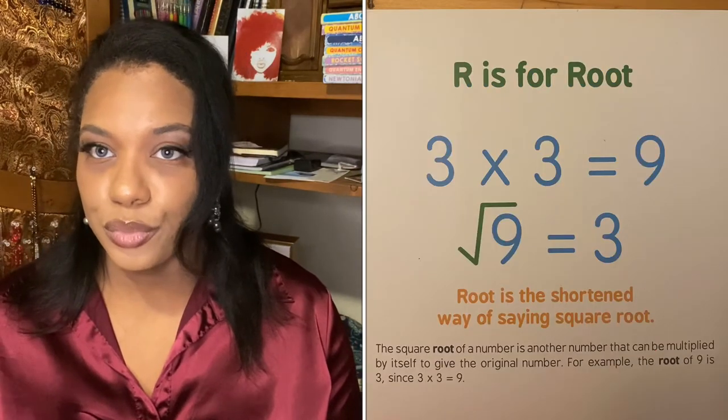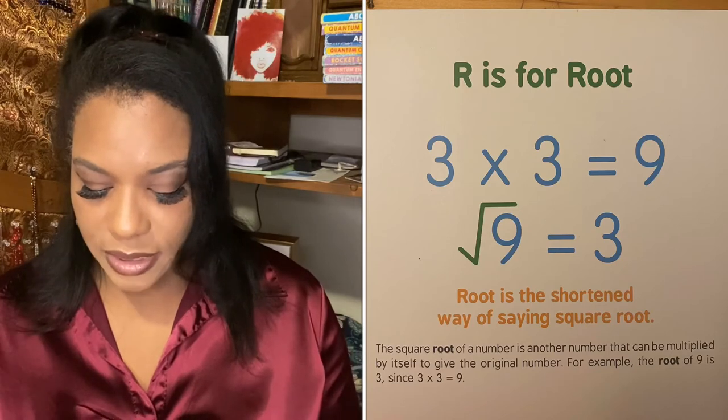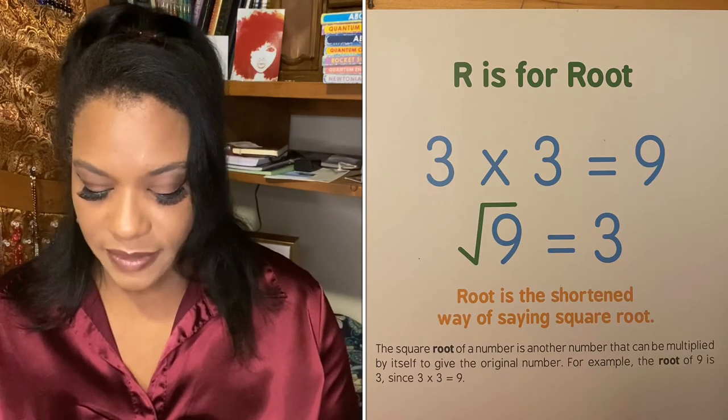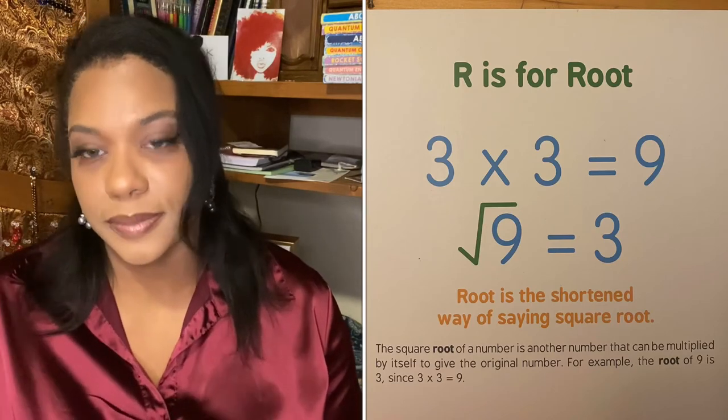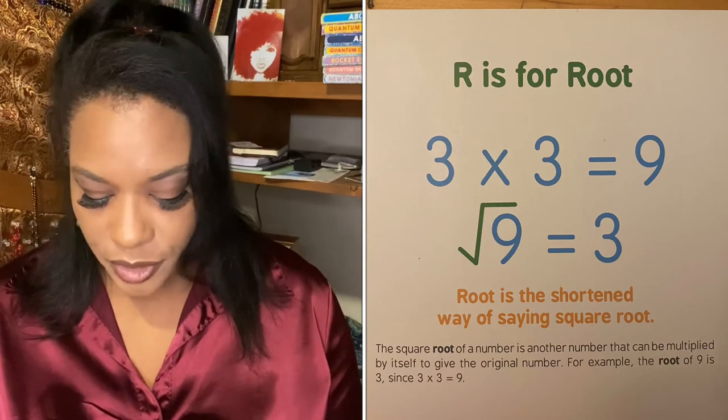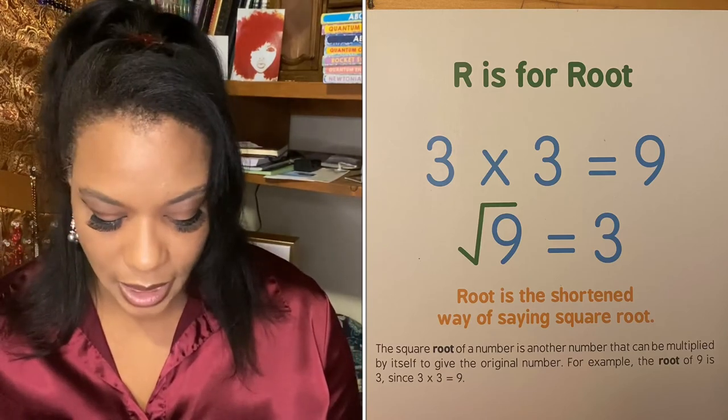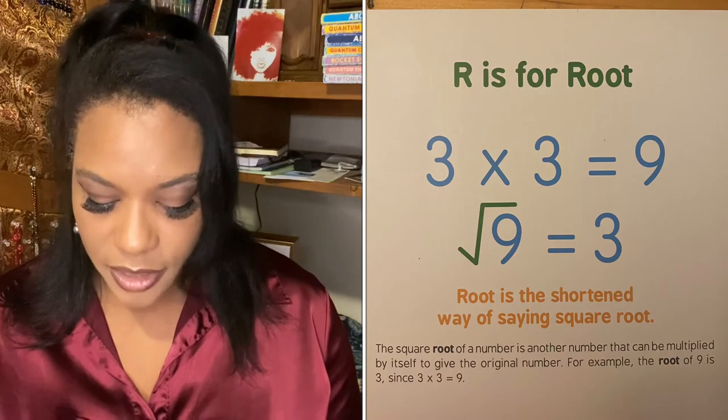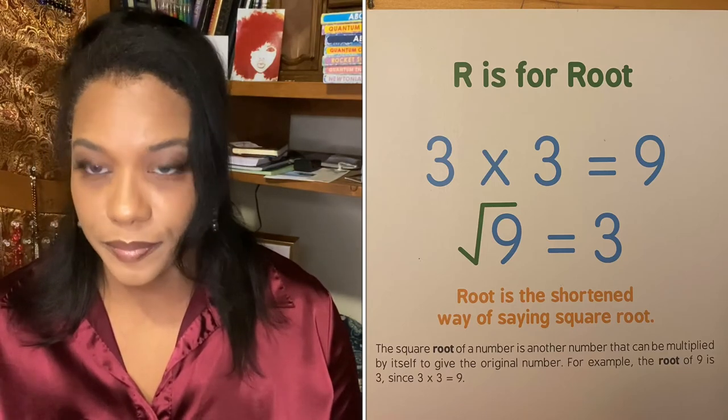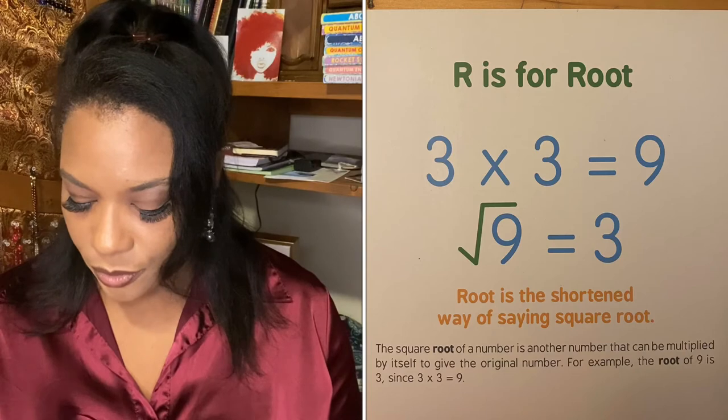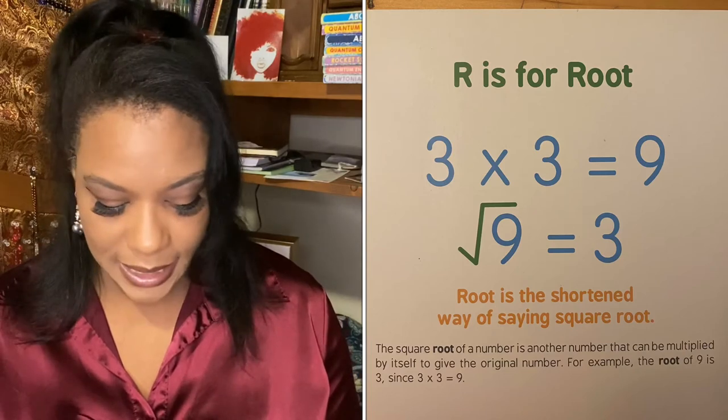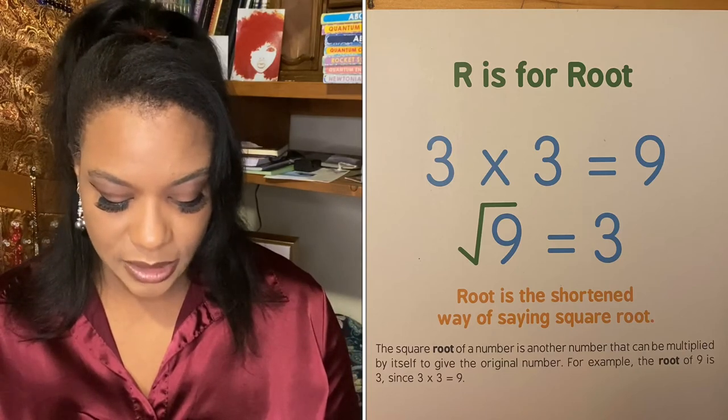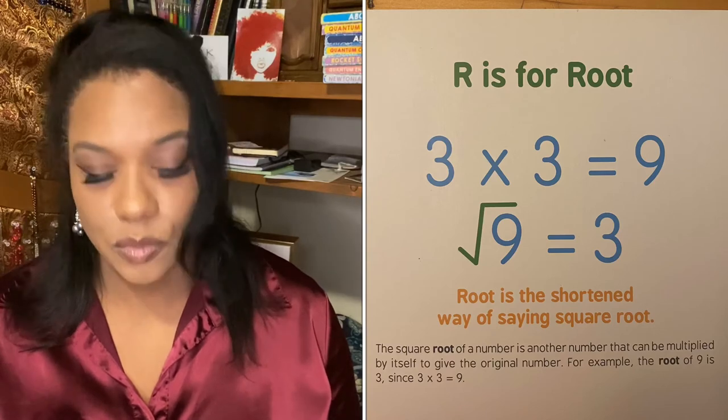R is for root. Root is the shortened way of saying square root. The square root of a number is another number that can be multiplied by itself to give the original number. For example, the root of nine is three since three times three equals nine.